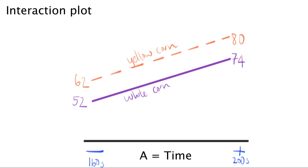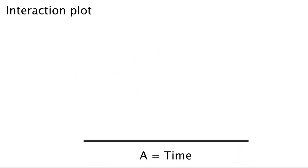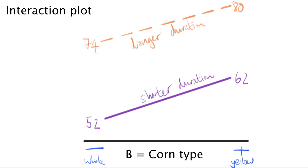So there we have an interaction plot. We could have flipped our choice of variables to start with on the horizontal axis. Let me quickly show you how. Or maybe you'd like to pause the video and try it yourself first. Put yellow corn and white corn on the horizontal axis, and then connect them with two different line styles. One line for short cooking time, and one line for long cooking time. Did you get the result that was shown here? I've used a solid line for short cooking durations, where the outcomes were 52 and 62, and I've used a dashed line for the longer duration experiments, where the outcome values were 74 and 80. Note that the lines are parallel again.